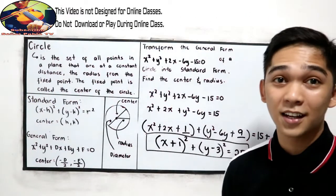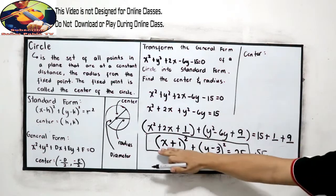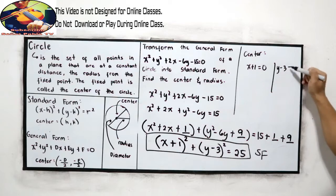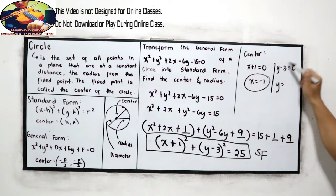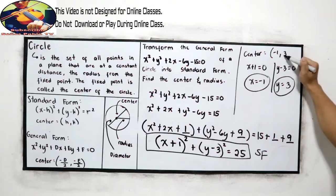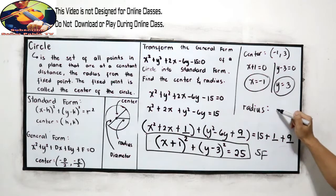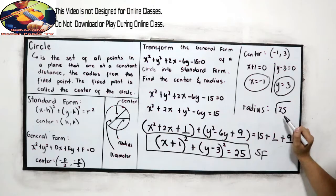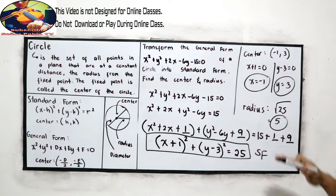We are now ready to find the center and the radius. For the center: set x plus 1 equal to 0, so x equals negative 1; set y minus 3 equal to 0, so y equals positive 3. The center is (negative 1, positive 3). For the radius: the square root of 25. Since 25 is a perfect square, the square root is positive 5. The radius is positive 5.